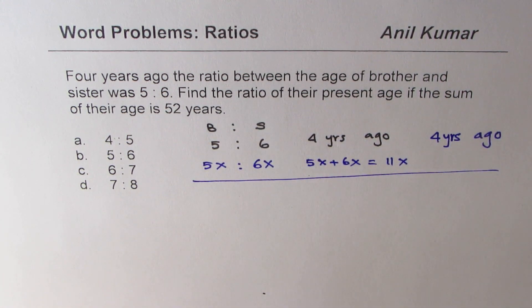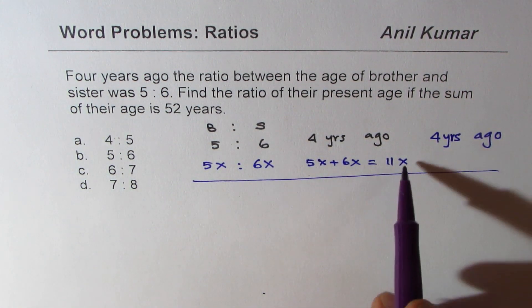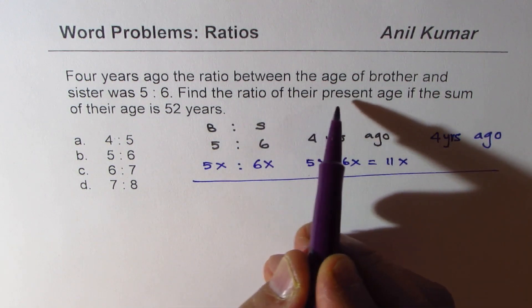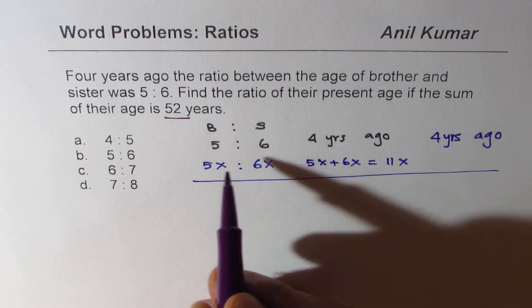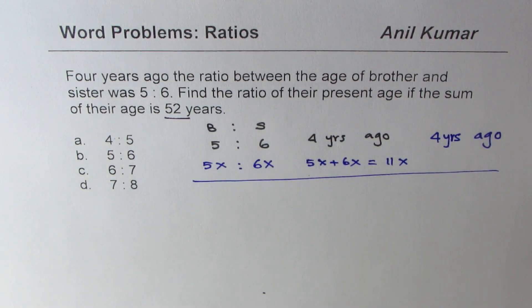So they get one equation here. Now let's look into the second part which is find ratio of present age if sum of their ages is 52. At present the sum is 52.